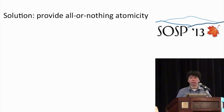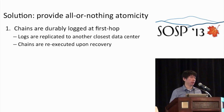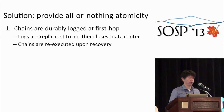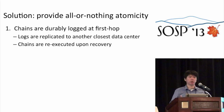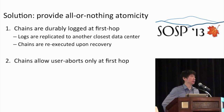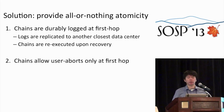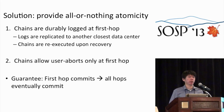Our solution is to provide all-or-nothing atomicity for chains, implemented using reliable logging. Upon committing the first hop of a chain, we write a log into a reliable log service that is replicated to a nearby data center — so it's fast. Upon recovery, we can detect stalled chains and re-execute them, moving the storage state to a consistent status. Additionally, we only allow users to abort in the first hop, which eliminates the second danger. With these two mechanisms, we can guarantee that if the first hop of a chain commits, all the other hops will eventually commit.